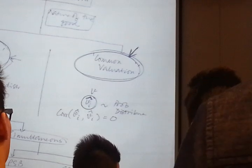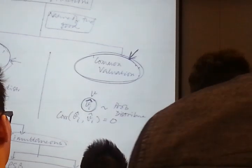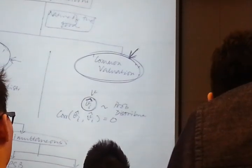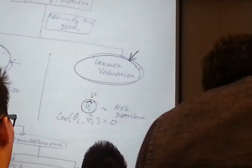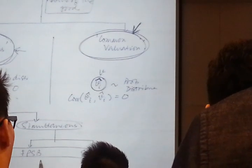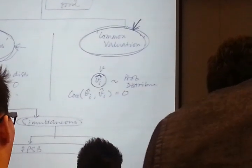So now you know the descriptions of the four different types of auctions: English, Dutch, first-price sealed bid, and second-price sealed bid.